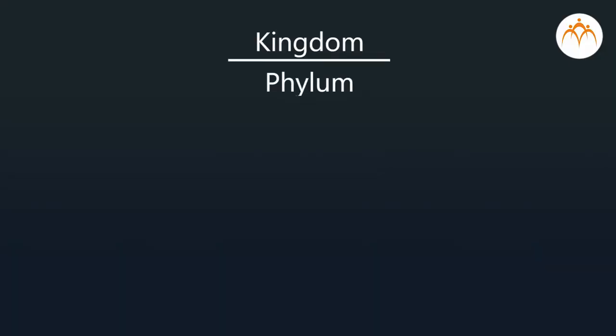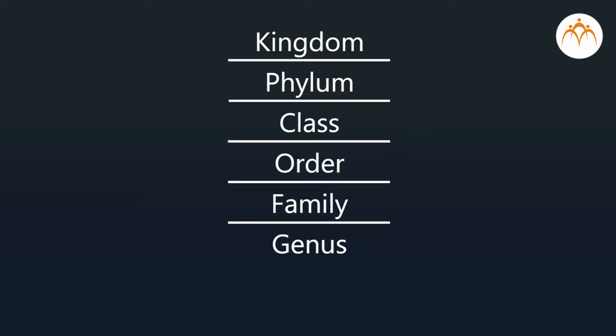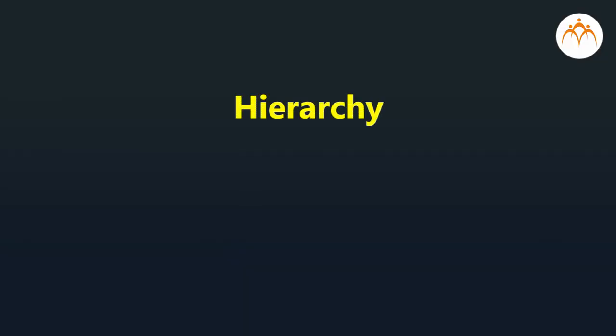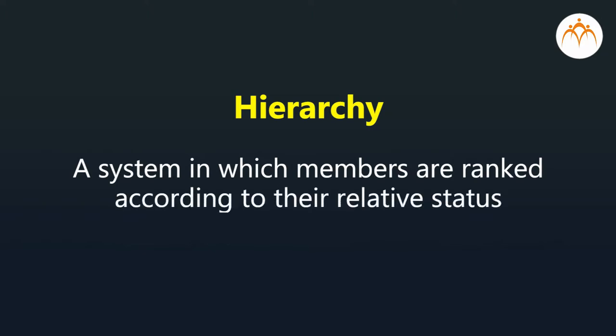In classification, we usually begin with the largest group like kingdom and move down to smaller groups like species. This is called hierarchy. Hierarchy is a system in which members are ranked according to their relative status or importance.